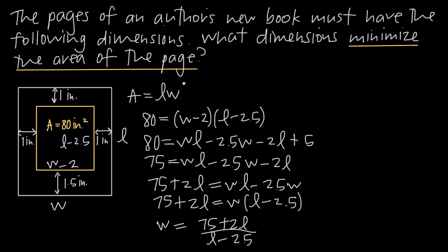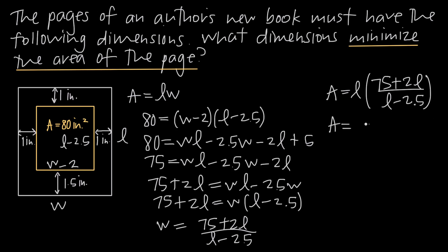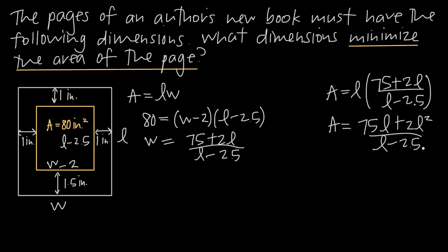Now we have a value for w that we can plug into our area equals length times width equation. So area equals l times (75 plus 2l) divided by (l minus 2.5). Distributing the l, we get area equals (75l plus 2l squared) divided by (l minus 2.5). Now that we have our optimization equation in terms of just one variable l, we need to take the derivative of this equation and solve for critical points.